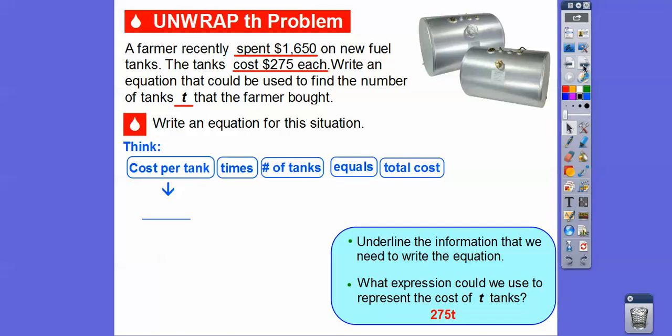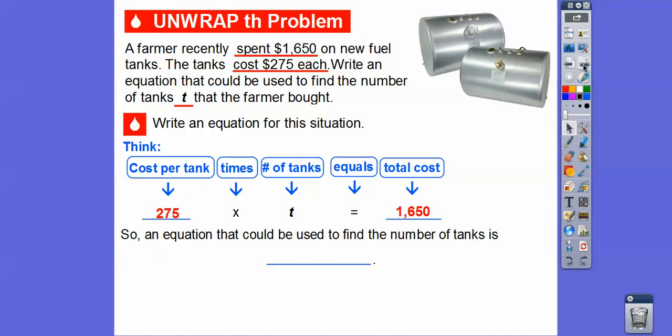So the cost per tank times the number of tanks equals the total cost. The cost per tank is $275 each. Times is just a multiply symbol. The number of tanks, well we don't know, so we're going to call this T right there. It's going to be our number of tanks equals the total cost. The total cost is how much that farmer spent, $1,650.